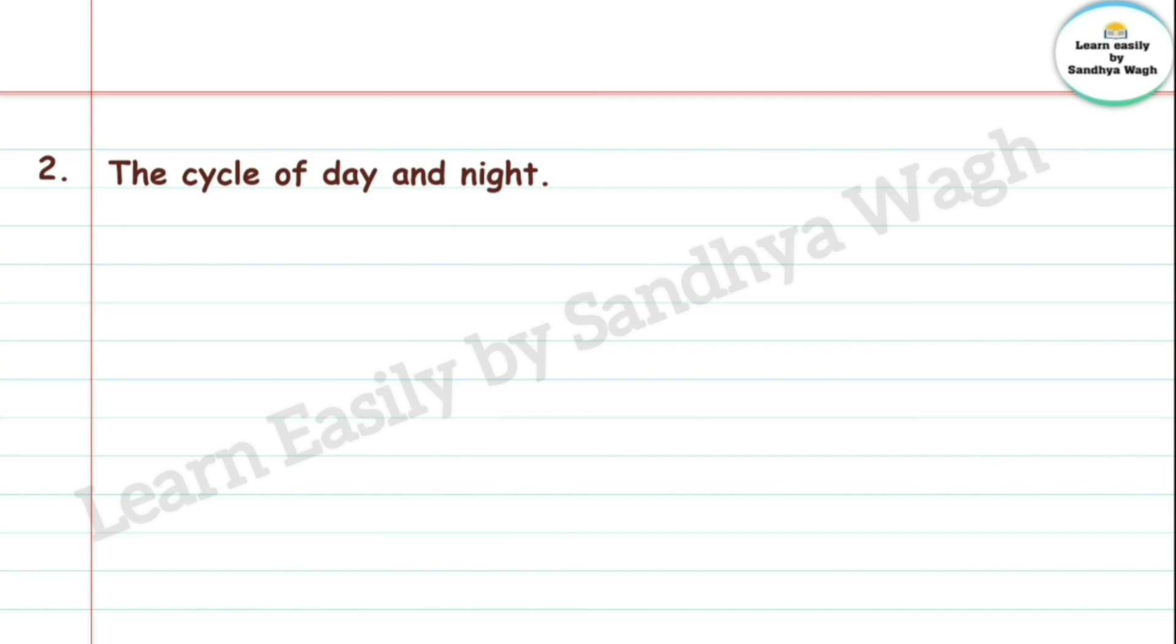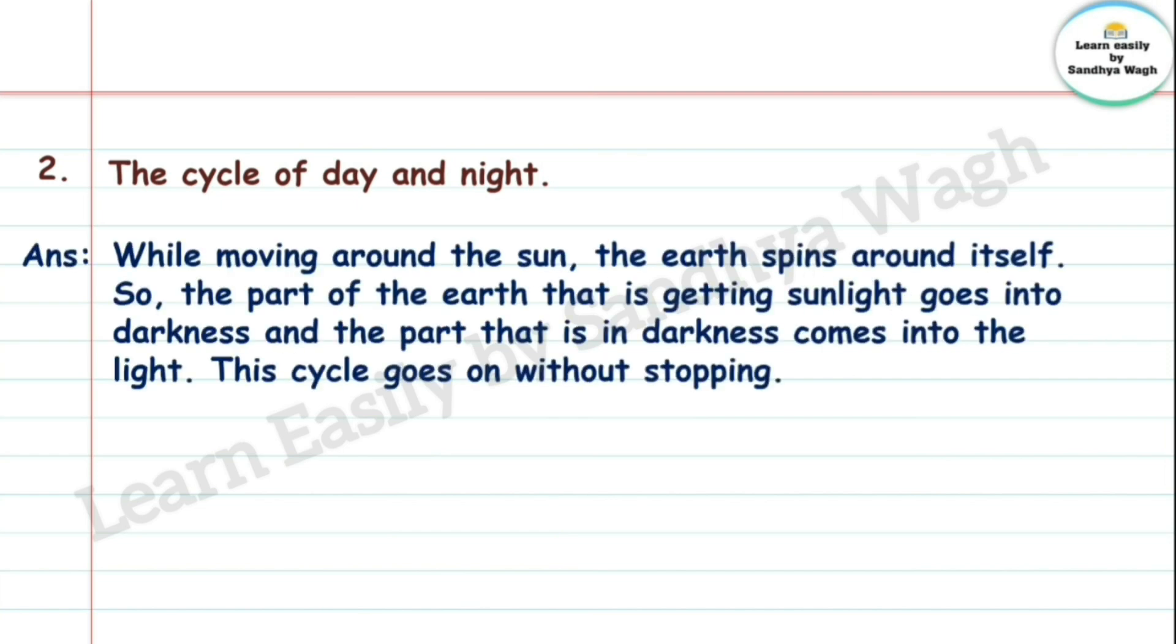2. The cycle of day and night. Diyusa maghun ratrayeti. Ratri maghun punna divaseto. Tesa aapleala sanghai se ahe. Answer: While moving around the sun, the earth spins around itself. So, the part of the earth that is getting sunlight goes into darkness and the part that is in darkness comes into the light. This cycle goes on without stopping.